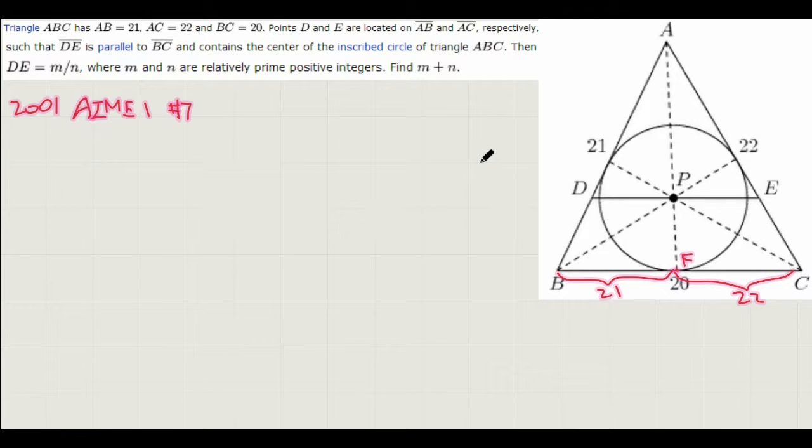So since we're working with mass points, why not just put some masses on here? We can set B have a mass of 22, and C have a mass of 21. Now, let's find the mass of A. We can use another angle bisector to find the ratio of, let's call this point G. We can find the ratio of AG to GB using the angle bisector theorem. And that's simply just 22 to 20. And by this, we can see that the mass of A is simply 20, which is pretty nice, since they're all whole numbers.